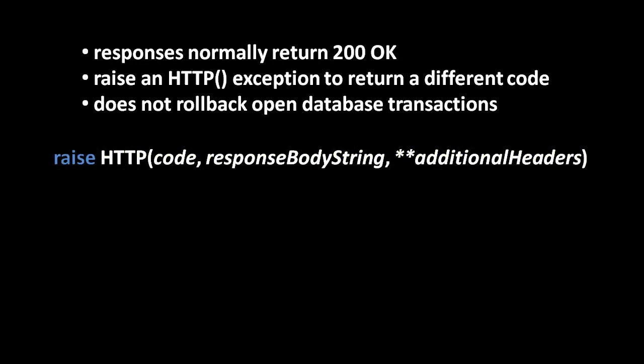Normally Web2Py will return a response with status code 200 and the message OK, which is the normal successful HTTP response. If an exception gets raised during processing and doesn't get handled, Web2Py will send a response with an error page and an error status code. If you wish to send a response with something other than status 200, you can do so by raising an exception type provided by Web2Py called HTTP — all in caps. The HTTP exception constructor expects the code as an integer, a string for the response body, and optionally named arguments which become additional headers.